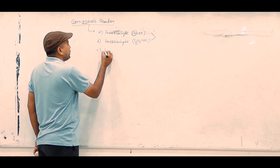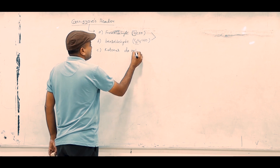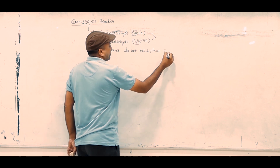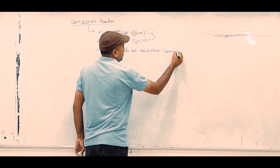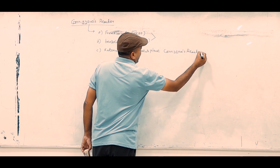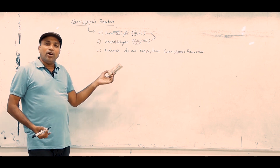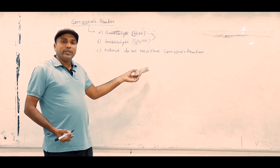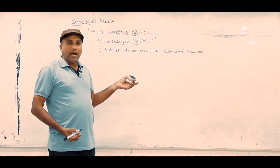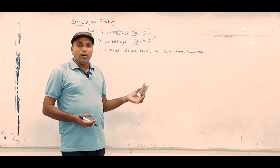Ketones do not undergo Cannizzaro's reaction. In this particular reaction, one of the aldehydes is oxidized to get a carboxylate ion, and the other one is reduced to get an alcohol, in the presence of concentrated alkali or base.